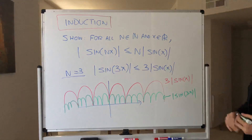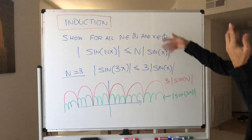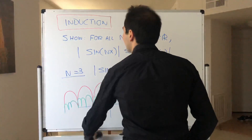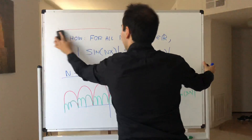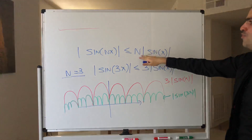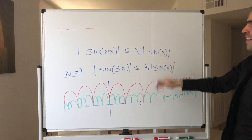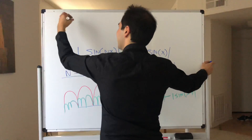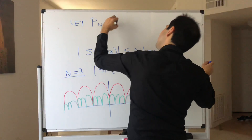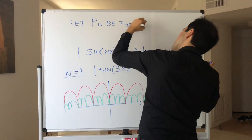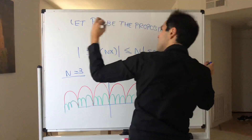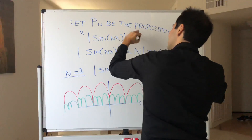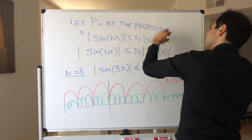But the point is we would like to prove this now. And because it depends on n, it's a good idea to use induction. So, using a rigorous inductive format, let P(n) be the proposition that absolute value of sine of nx is less than or equal to n times absolute value of sine of x, for all x.